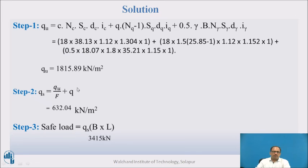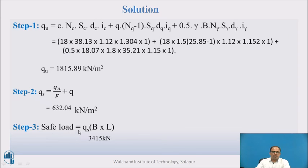The safe bearing pressure is qs = qu / FOS + q, where q = γ × Df. Substituting: qs = 1815.89 / 3 + 18.07 × 1.5 = 632.04 kN/m². The safe load on the footing is then qs × B × L = 632.04 × 1.8 × 3 = 3415 kN.